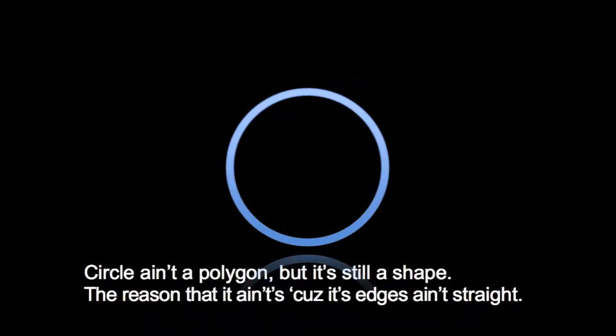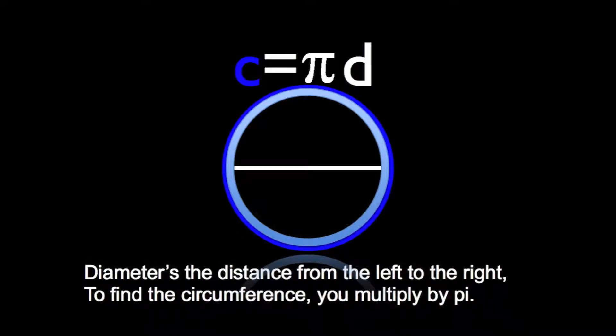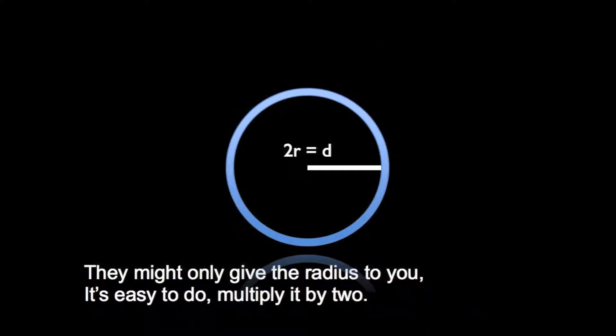Circle's not a polygon, but it's still in shape. The reason that it ain't, cause it's just straight. Diameter in the distance from left to right. To find the circumference, we multiply by pi. They might only give the radius to you. It's easy to do, we multiply by two.